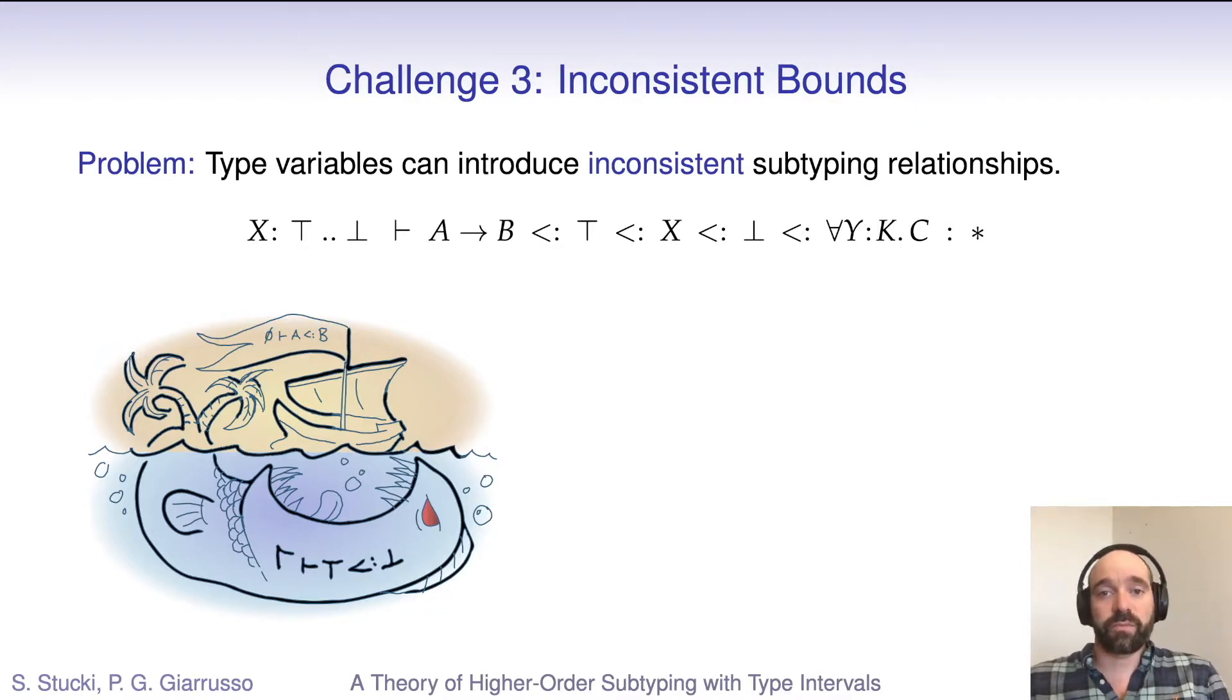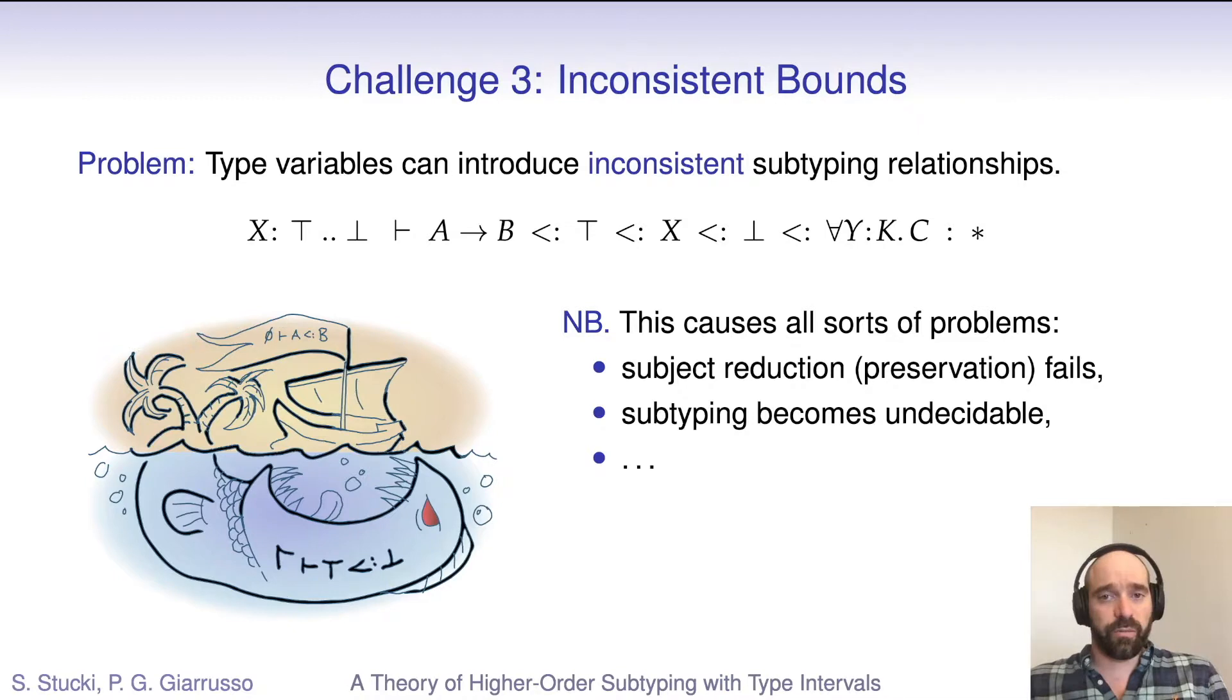This is not the only bad news, I'm afraid. Reflection of inconsistent bounds really breaks a lot of things. For example, subject reduction or preservation of types under reduction doesn't hold in general, and subtyping becomes undecidable, which we prove in the paper.